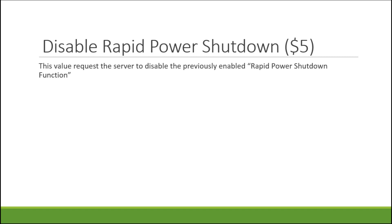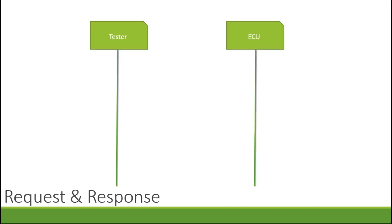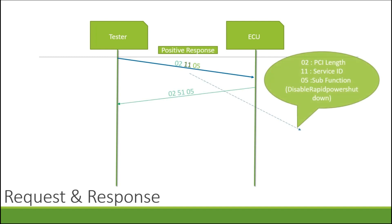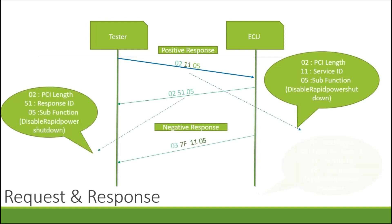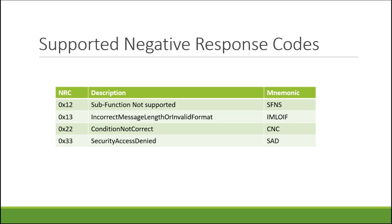Disable rapid power shutdown, sub-function 0x05, disables the previously enabled rapid power shutdown function. The request and response are as shown. The supported negative response codes are: sub-function not supported (0x11), incorrect message length or invalid format (0x13), conditions not correct (0x22), and security access denied (0x33). If you want to perform an ECU reset and your security key does not match, you will receive NRC 0x33 — security access denied.